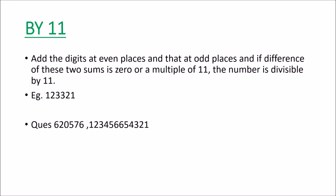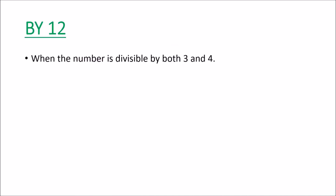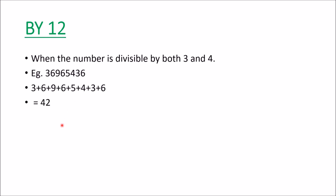Now let us see the divisibility test of 12. Any number is divisible by 12 when it is divisible by both 3 and 4. To check divisibility by 4, we look at the last two digits — they are divisible by 4, so the whole number is divisible by 4. To check divisibility by 3, we add all the digits; the sum is 42, and 42 is divisible by 3, so the number is divisible by 3. Since it is divisible by both 3 and 4, the number is divisible by 12. Check the number on screen for divisibility by 12 and write your answer in the comment box.